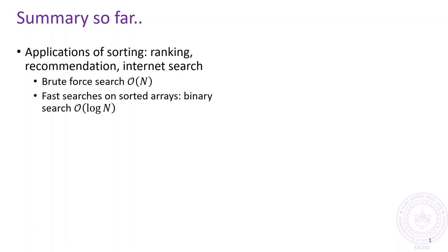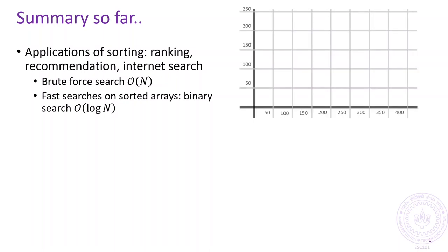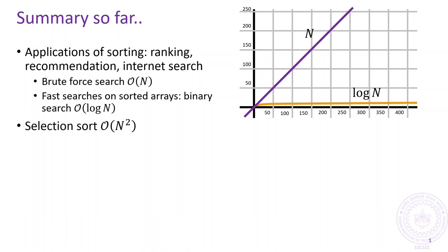In our previous discussions, we have seen how sorting can help us speed up searching by enabling binary search, which is much faster than brute force search. In the last discussion, we learned about two algorithms for sorting: selection sort and insertion sort. The algorithms were simple but not super fast, taking up to order n squared time to sort an array with n elements.